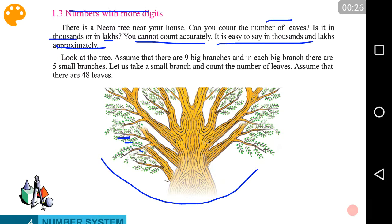Look at the tree. Assume that there are nine big branches - one, two, three, four, five, six, seven, eight, nine branches. And in each big branch there are five small branches. Let's assume that each branch has five small branches.